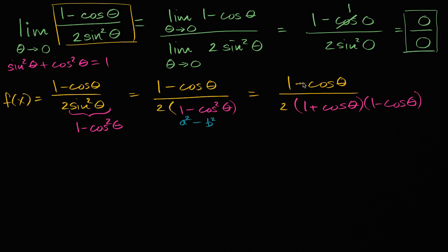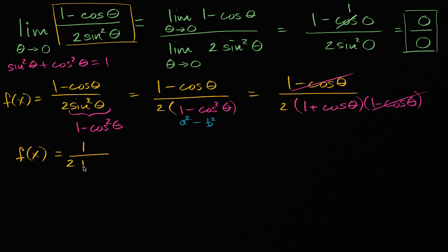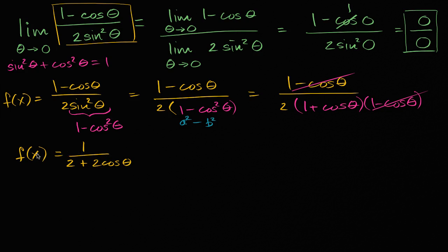Now this is interesting — I have a one minus cosine theta in the numerator and one minus cosine theta in the denominator. We might be tempted to cancel them, giving f of x equals one over two plus two cosine theta. And we'd be almost right. This simplified expression is defined when theta equals zero, but the original f of x is not — it has a zero in the denominator at theta equals zero. So to make this equivalent to f of x, we must say theta cannot equal zero.